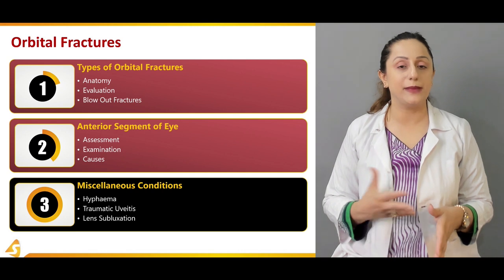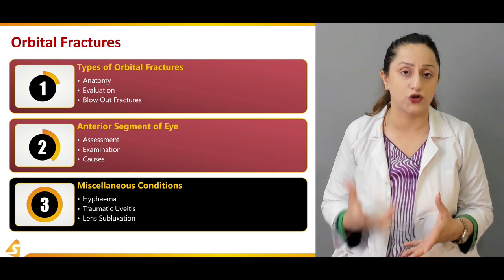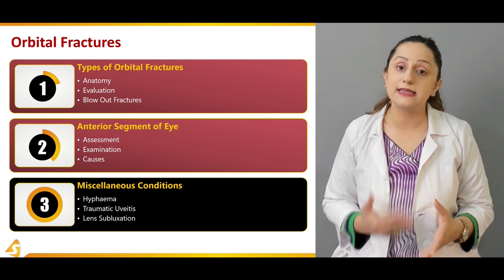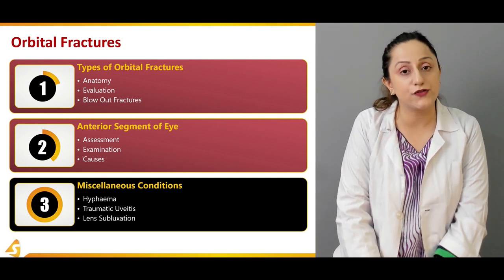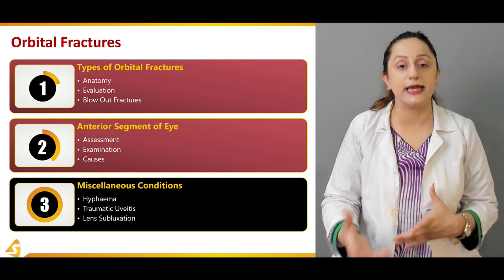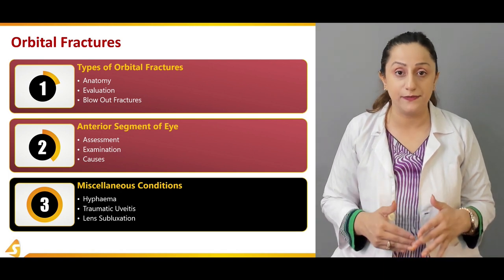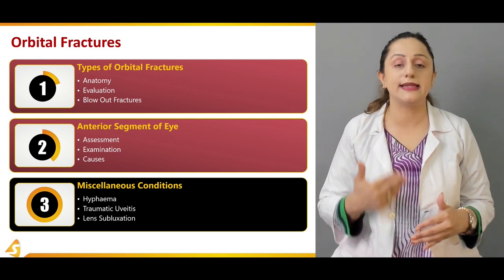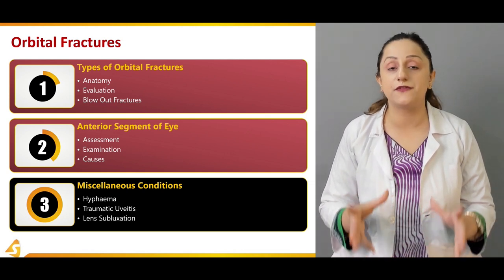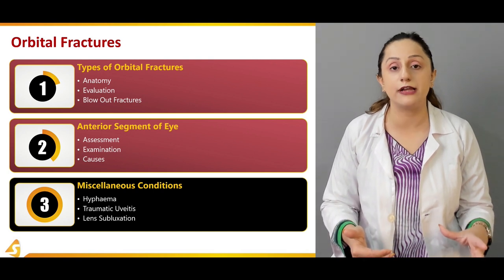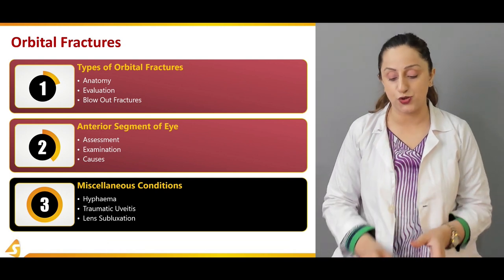Traumatic uveitis can occur when the uveal apparatus is damaged in cases of trauma. A rise in intraocular pressure is the resulting feature in uveitis. Lens subluxation is also noted, where the lens is distorted and not in its normal position. A red reflex examination is carried out to check for the occurrence of traumatic cataract in such patients.